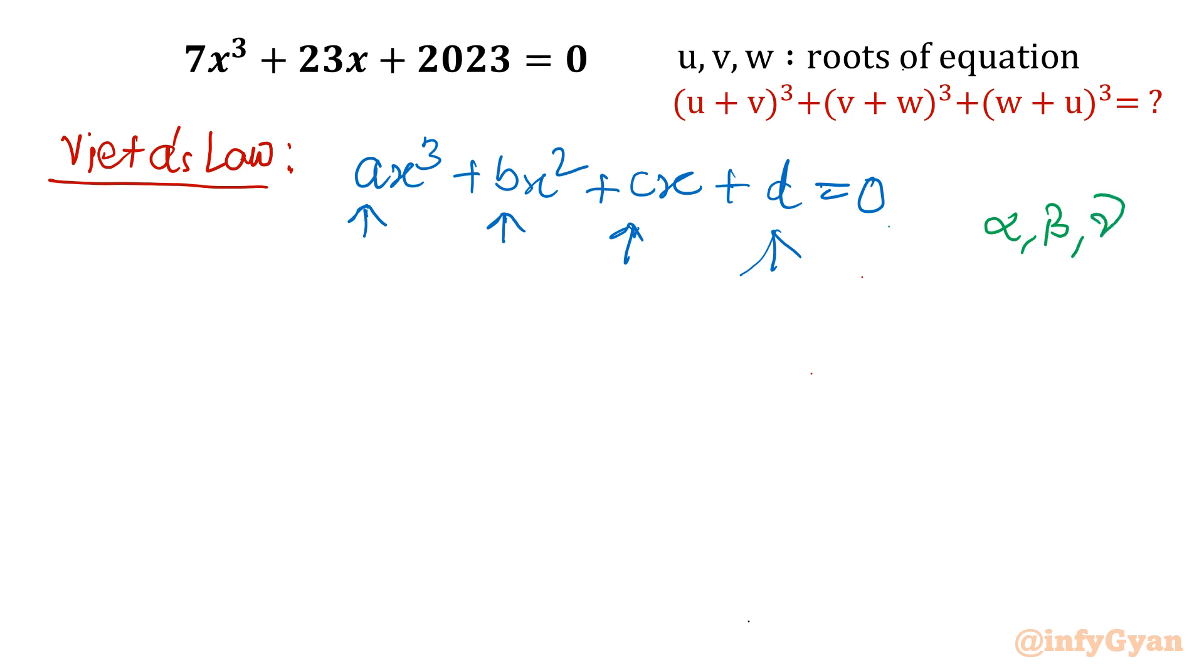Then using Vieta's law, the sum of roots α + β + γ equals the coefficient of x² over leading coefficient, so that is -b/a. Sum two at a time: αβ + βγ + γα = c/a, the coefficient of x over leading coefficient. So this is equation number two.